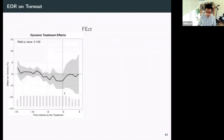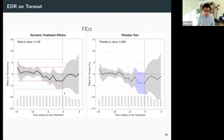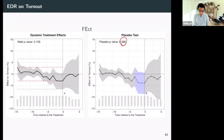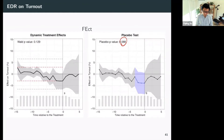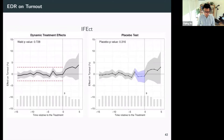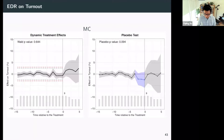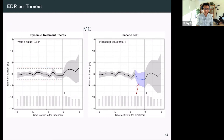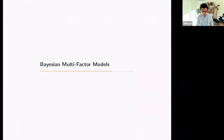Skipping the EDR approach — the result is basically the same as IFE. With fect you cannot pass the placebo test. Looking at the figure, it does not look like an ideal DiD case, and the equivalence approach would reject. IFE and MC look better, though the trend for MC doesn't look that clean in the placebo.